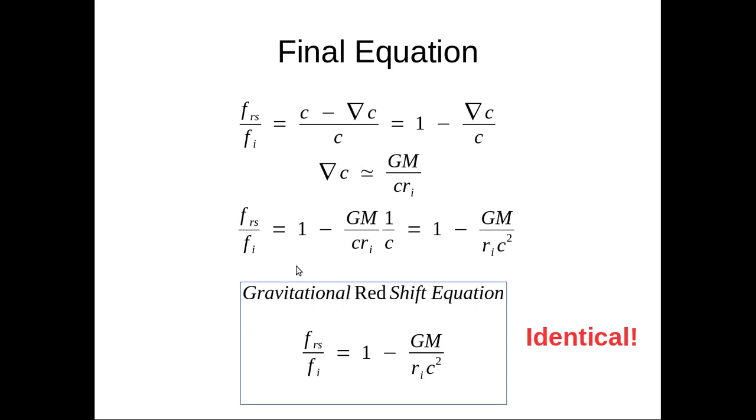So, let's find out what the final equation is. FRS over FI equals C minus delta C over C. You get 1 minus delta C over C. Delta C is GM over CRI. Plug that in the equation. And here we have it, the gravitational redshift equation. It's identical.